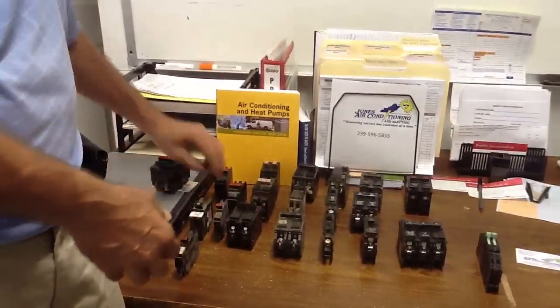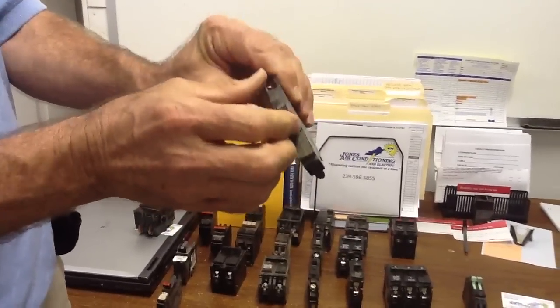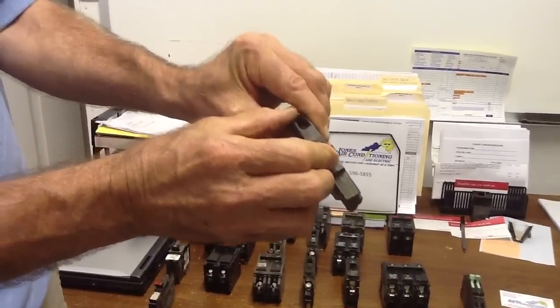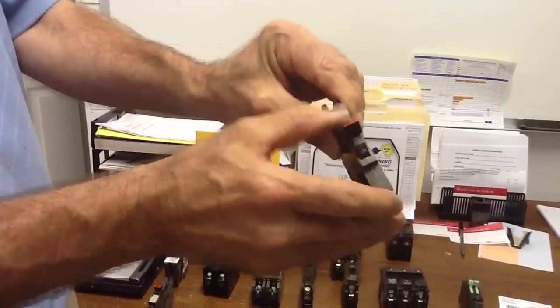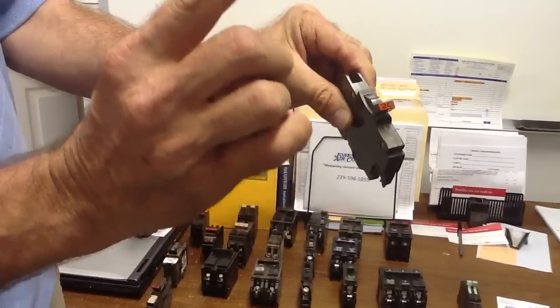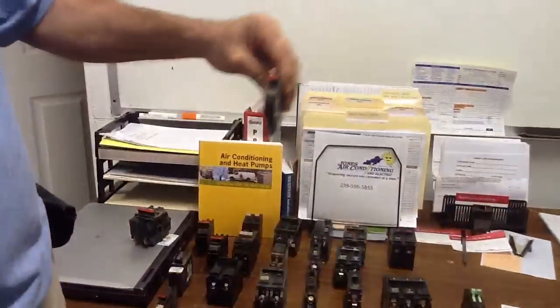Here is a single pole Federal Pacific breaker. This particular one has to be $20, but listen to how hard this is to open and close. Very difficult. That's the reason they had to go off the market, because they would not trip. The house would catch on fire.